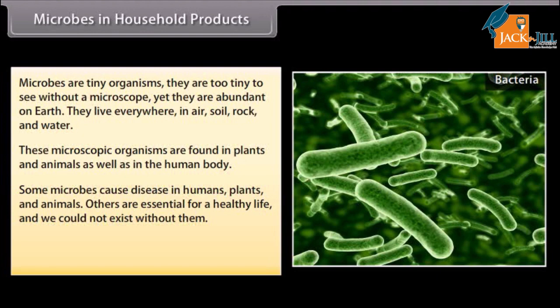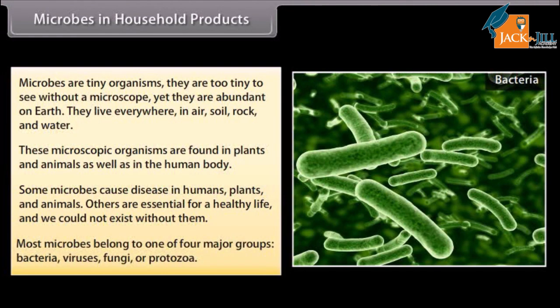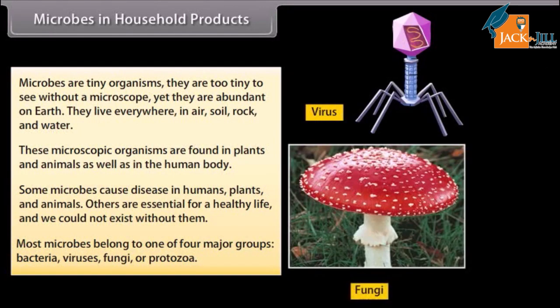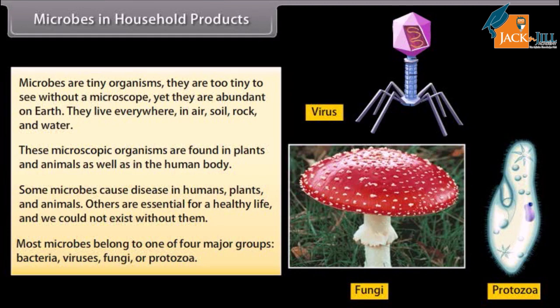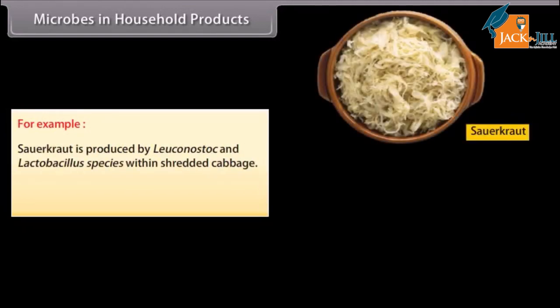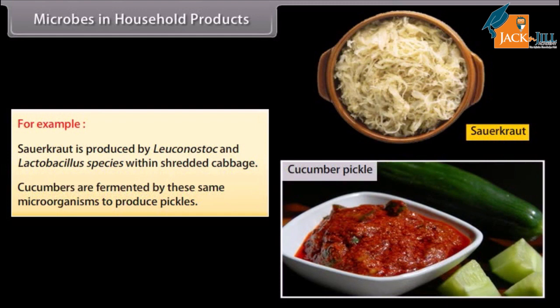Others are essential for a healthy life and we could not exist without them. Most microbes belong to one of four major groups: bacteria, viruses, fungi or protozoa. There are many food products which are formed from microbes. For example, sauerkraut is produced by Leuconostoc and Lactobacillus species within shredded cabbage. Cucumbers are fermented by these same microorganisms to produce pickles.